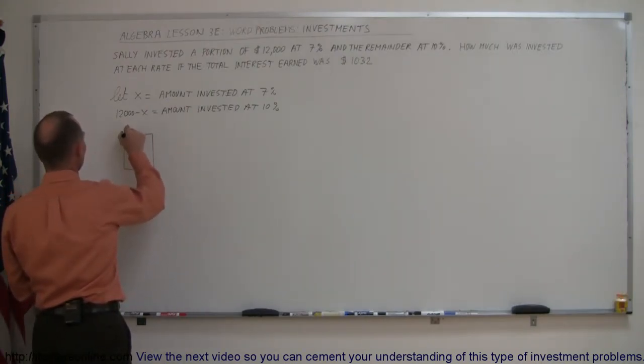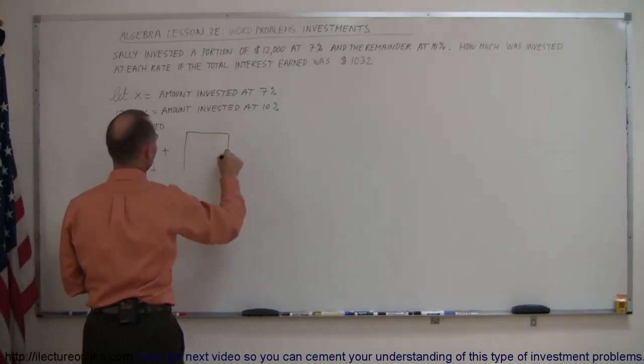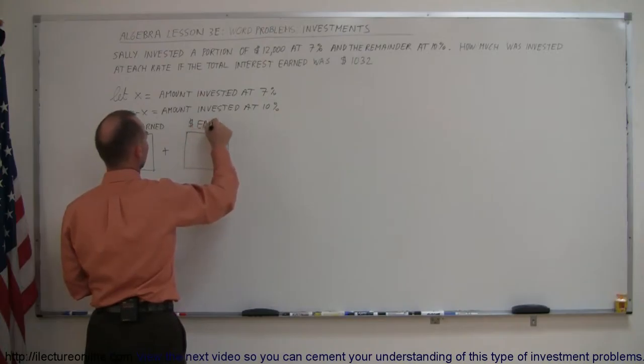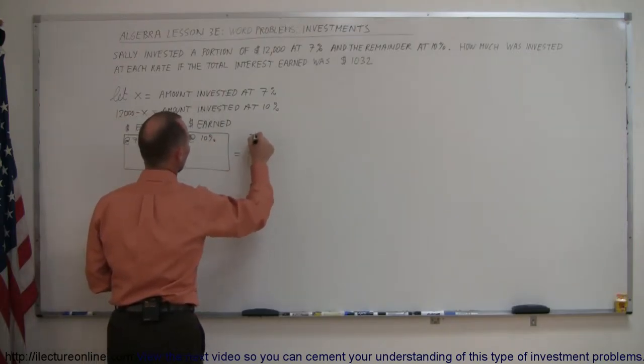the dollars earned at 7% plus the dollars earned at 10% must equal the total earned.